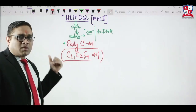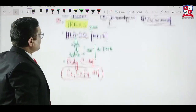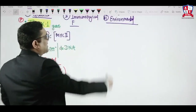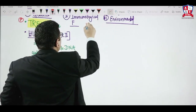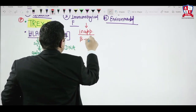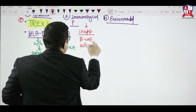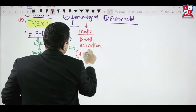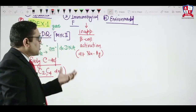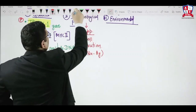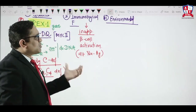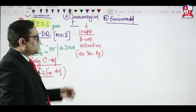The key genes are HLA-DQ, complement, and TREX1. Regarding immunological factors, because of various reasons there will be inappropriate B cell activation, usually due to nuclear antigens. Cellular damage releases nuclear antigens causing excessive B cell activation, leading to loss of B cell tolerance, making the patient prone to develop SLE.